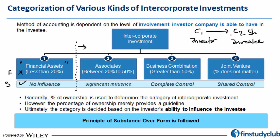The second level is where C1 is able to get some influence over C2. In the case of an associate, the investor gets the opportunity to be heard in board meetings — not to control, but to have a voice. The board will listen, but not necessarily agree. That's Case 2: significant influence without control.